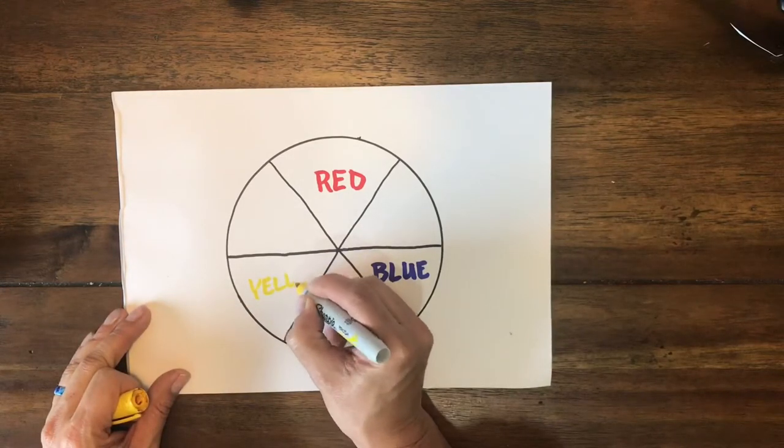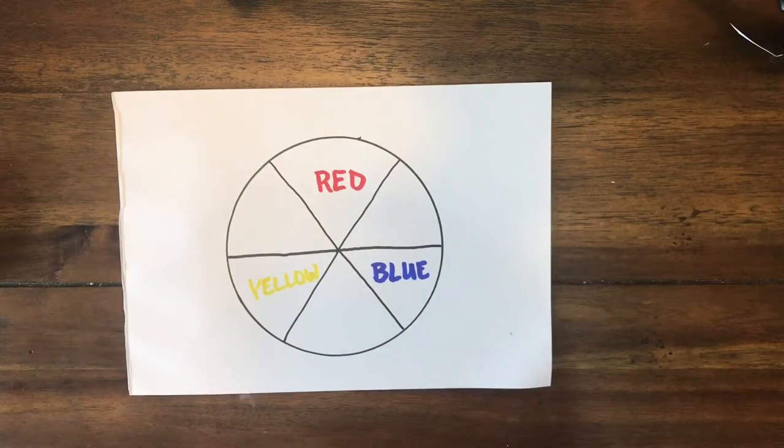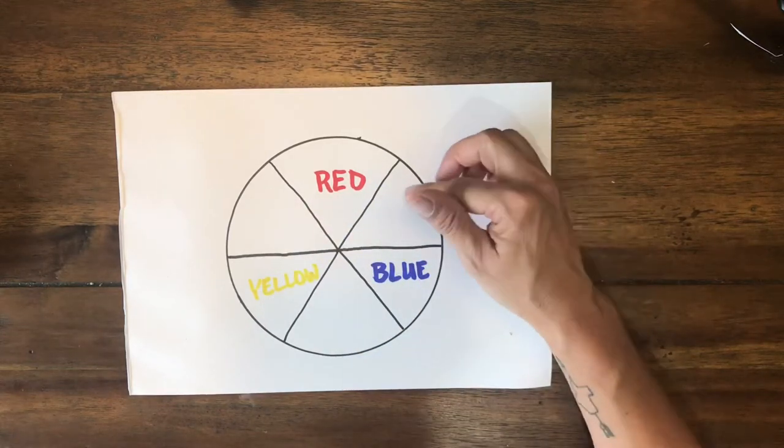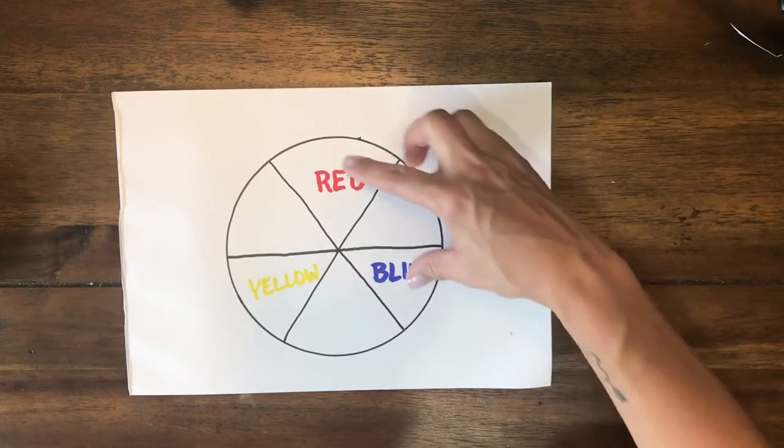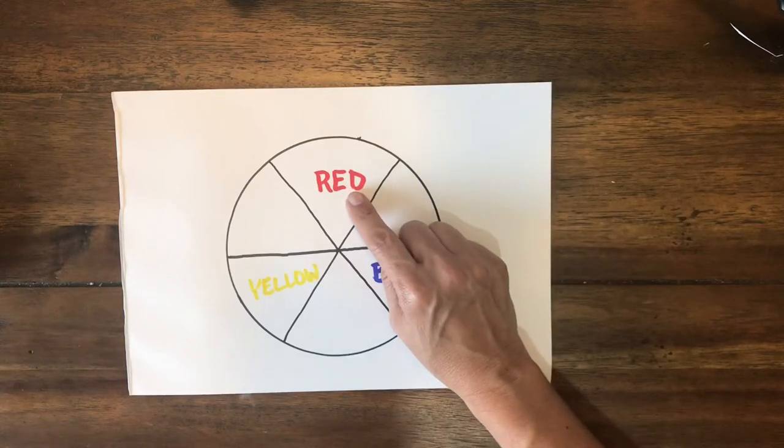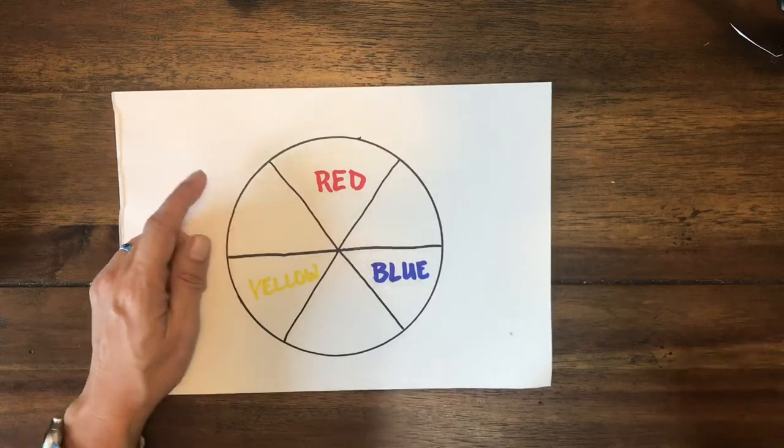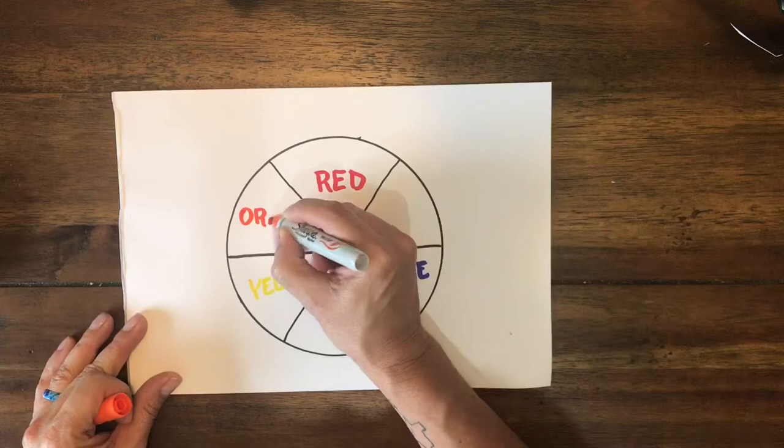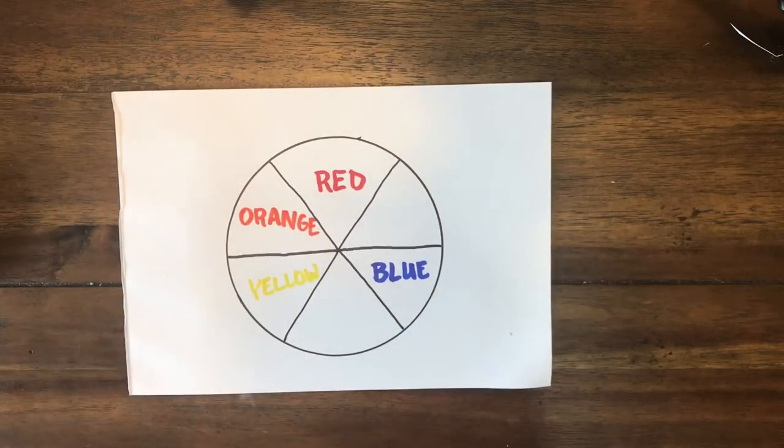And I'm going to skip this one and I will put yellow right here. These are my primary colors. The reason that I skipped a space is because we can show the secondary colors that are made by combining the colors on either side of it. For example, if I take red paint and mix it with yellow paint I will get orange.